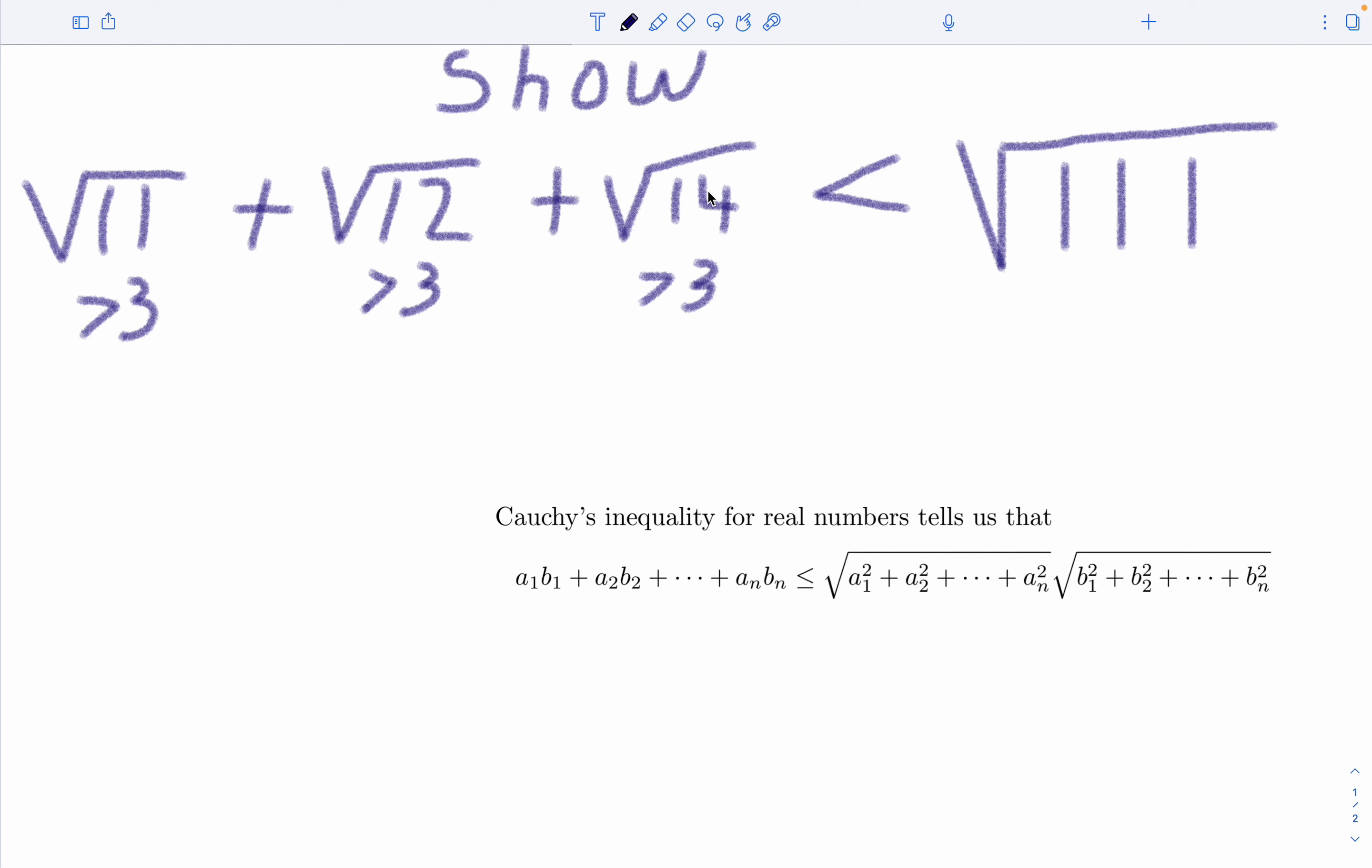And again, this one's pretty close to 4. Now notice here the square root of 111 is bounded below by 10 and above by 11. So it kind of has your interest up here. All this adds up to 3 plus 3 plus 3 is 9 and that's a crude lower bound. Square root of 14 is close to 4, so this looks like it might be very close.